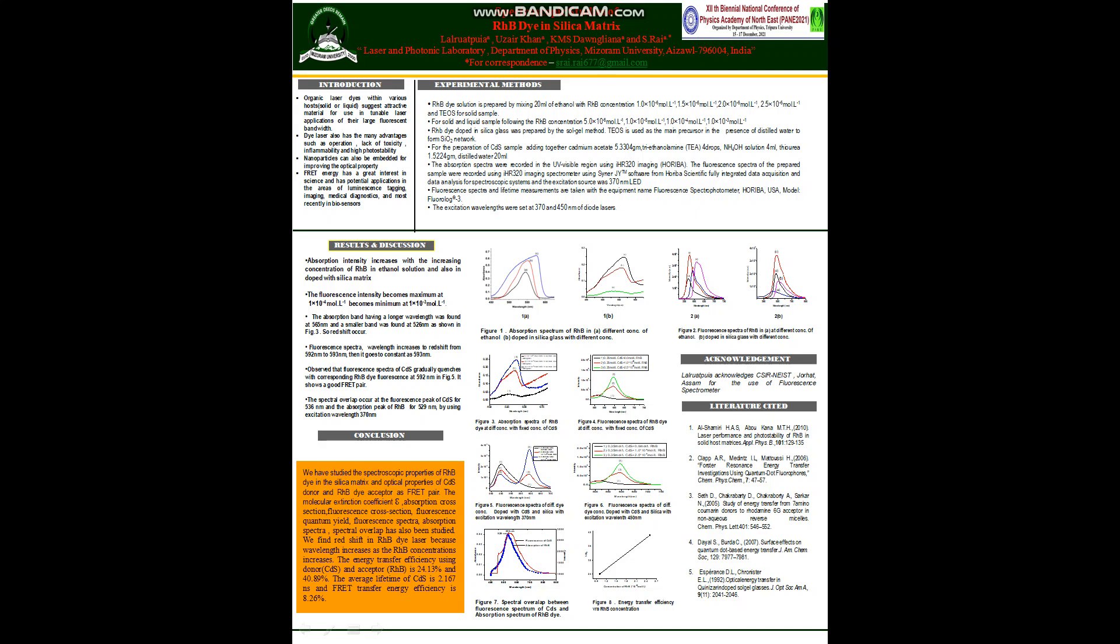And also, let me go to our conclusion. In our conclusion part, we have also mentioned some of what we have also studied. Here, we have also studied molecular extinction coefficient, absorption cross section, fluorescence cross section, fluorescence quantum yield, fluorescence spectra, absorption spectra, and spectrum overlap. From our graph, we find that Rhodamine dye lases because intensity increases as the Rhodamine concentration increases. And the energy transfer efficiency using donor and acceptor Rhodamine B is 24.13% and 40.89%. And average lifetime of CDS is 2.16 nanoseconds. And rate of energy transfer efficiency is 8.26%. Okay, thank you.